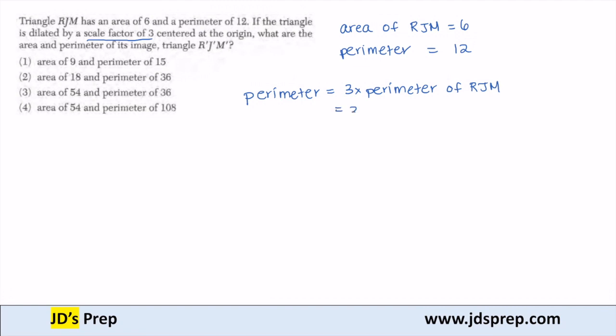then it's going to be 3 times the perimeter of my original. So that's 3 times 12, which means my perimeter is going to be 36. Because I know that, let's eliminate 1 and 4.